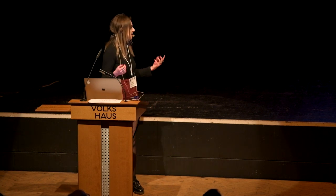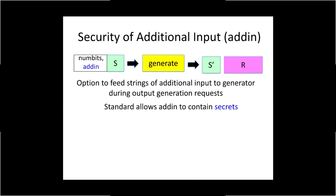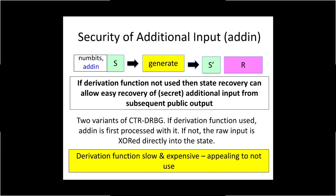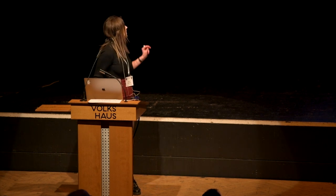There is another example of a flexibility which introduces less desirable security properties. There's an option in the standard to feed strings of additional input to the NIST PRGs as a way of introducing more entropy into the state during output generation, and crucially the standard allows this additional input to contain secrets. For the counter-DRBG without a derivation function, the additional input is XORed in directly — an appealing efficiency choice — but what we show is that this can actually be really insecure. In certain circumstances, an attacker who learns a state can then easily recover these strings of additional input from subsequent public output, which is especially troubling given that the additional input may contain secrets.